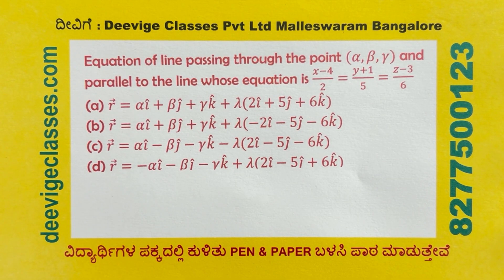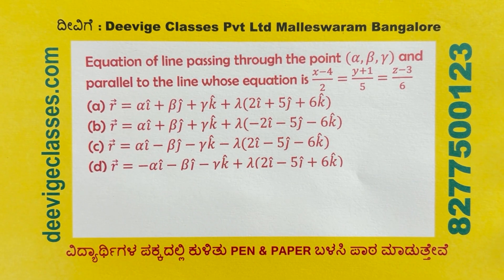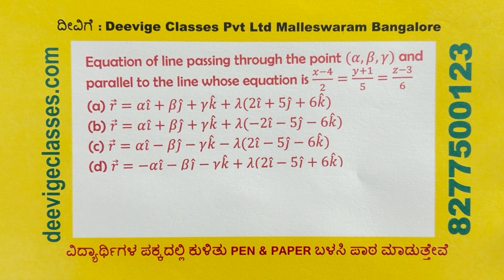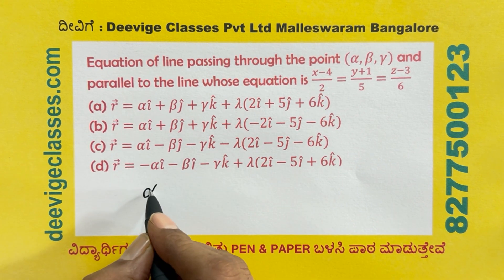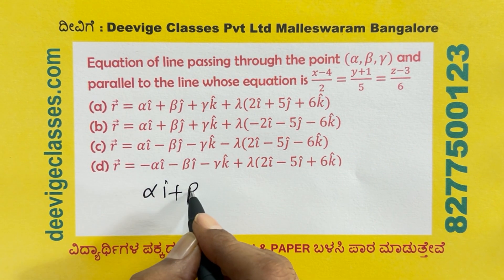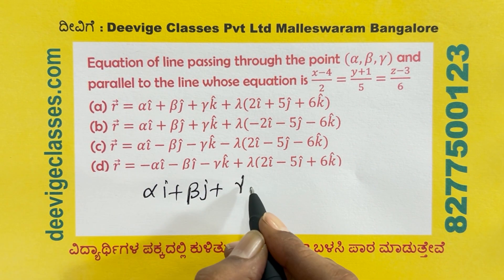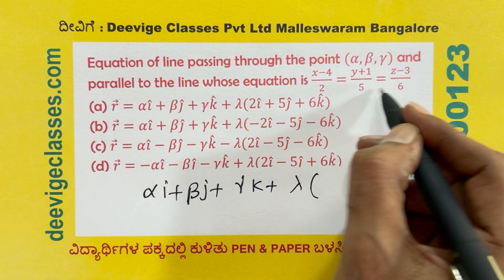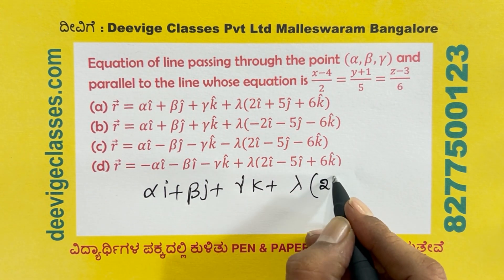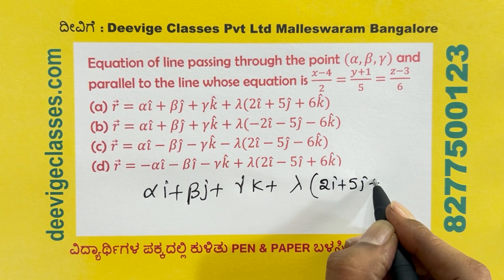Equation of line passing through the point (alpha, beta, gamma) and parallel to the line whose equation is x minus 4 over 2 equals y plus 1 over 5 equals z minus 3 over 6. The position vector is alpha-i plus beta-j plus gamma-k, plus lambda times (2i plus 5j plus 6k) — using the denominators as direction ratios.